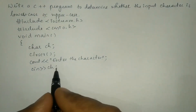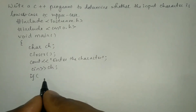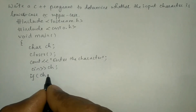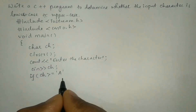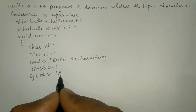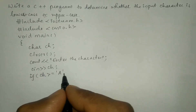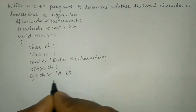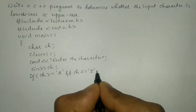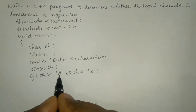Next we are going to check whether the character entered by the user is uppercase or lowercase. I'm going to write: ch is greater than or equal to 'A' — because it is a character constant, any letter enclosed within a single pair of quotation marks is called a character constant — and using the logical AND operator, ch is less than or equal to 'Z'.